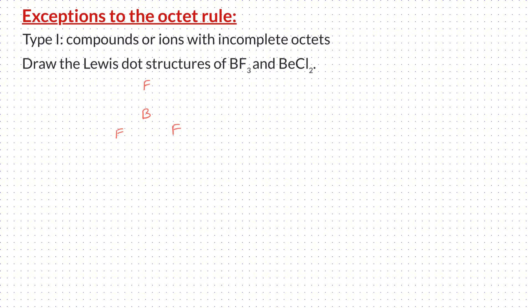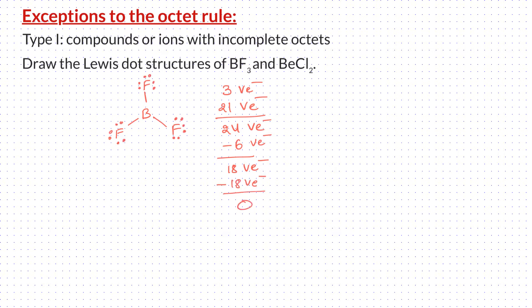Let's count the valence electrons. Boron belongs to group 3A, so it has 3 valence electrons. Fluorine belongs to group 7A, and each of them has 7 valence electrons, so 21 in total. Adding them up, we have a total of 24 valence electrons in BF3. I connect the central atom to the terminal atoms by single bonds, using up 6 valence electrons, so I have 18 valence electrons remaining. I am going to place these valence electrons on the terminal atoms, and I use up all the electrons.